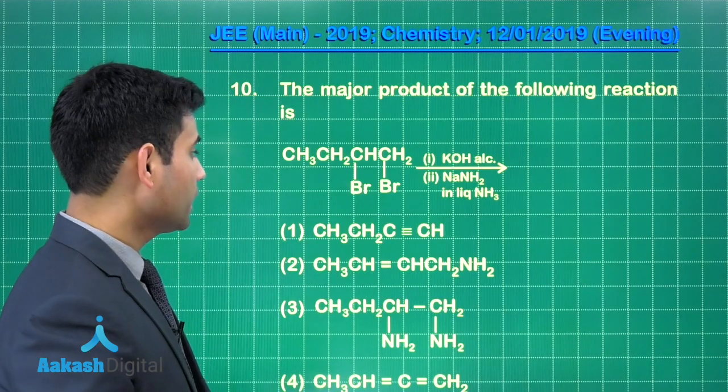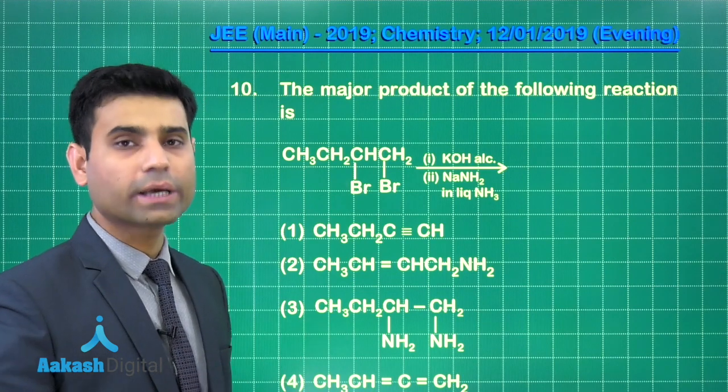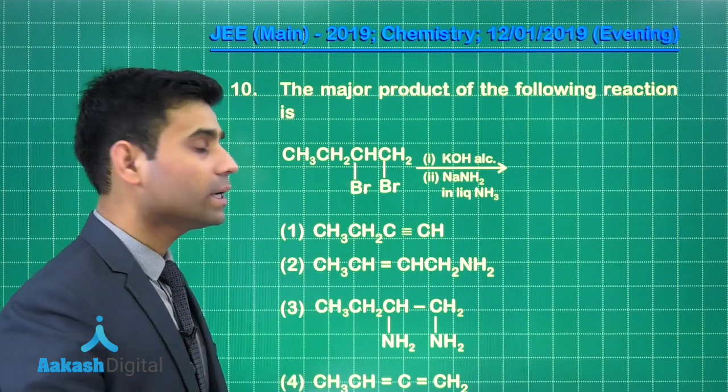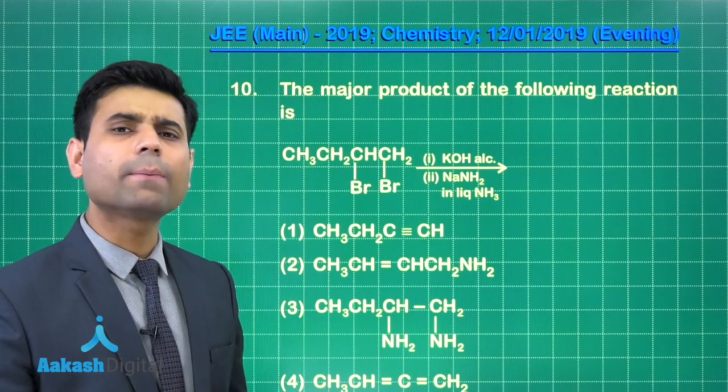This is the next question we have where we have 1,2-dibromobutane. It reacts with KOH-alcoholic and NaNH2 in liquid ammonia. So what will happen here?